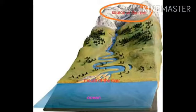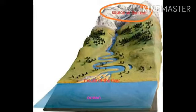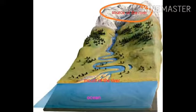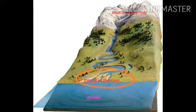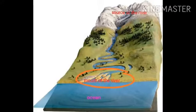The place where the river originates is called the source. As you can see in the diagram, the river moves down the slope in a valley. Generally, the river falls into a large water body such as a sea, ocean, or lake. The place where the river joins another water body is called the mouth — that is the end of the river.